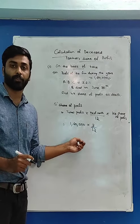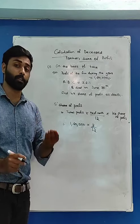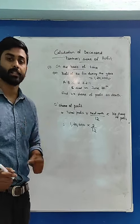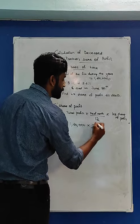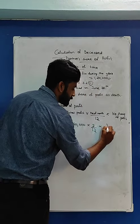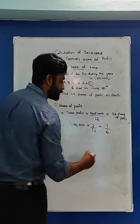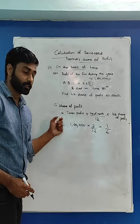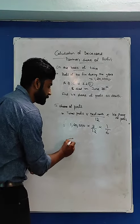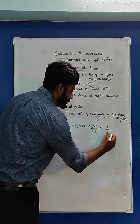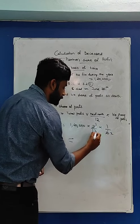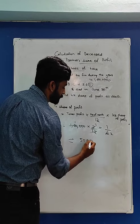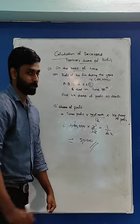That gives us the profit of the firm for 3 months. Now we calculate his share of profit. His share of profit was 1 by 6. So his share of profit will be 5,000.